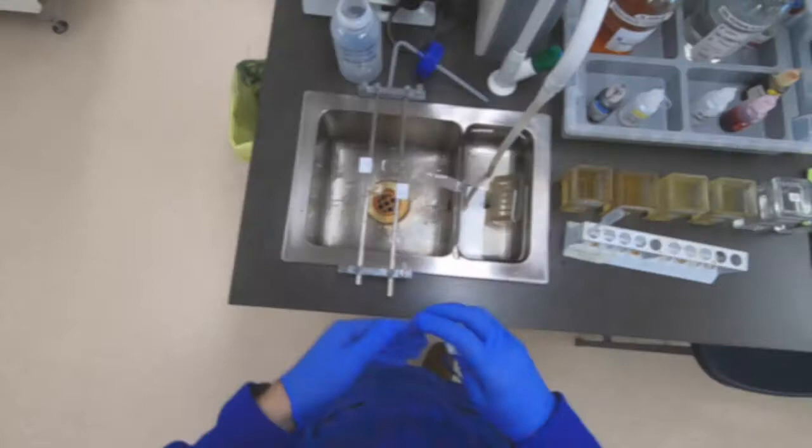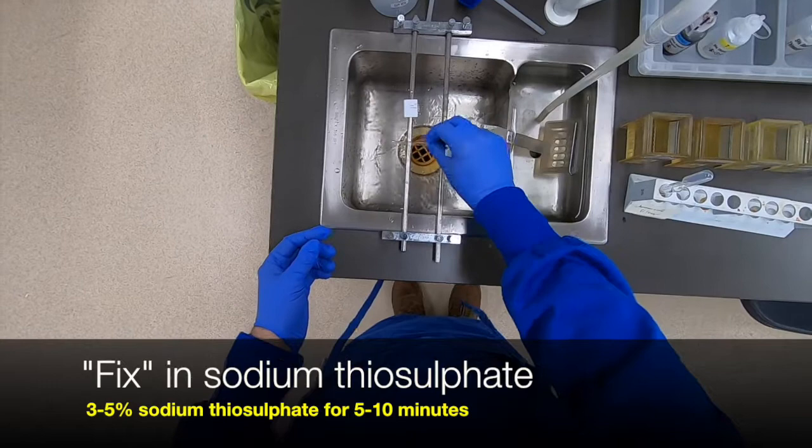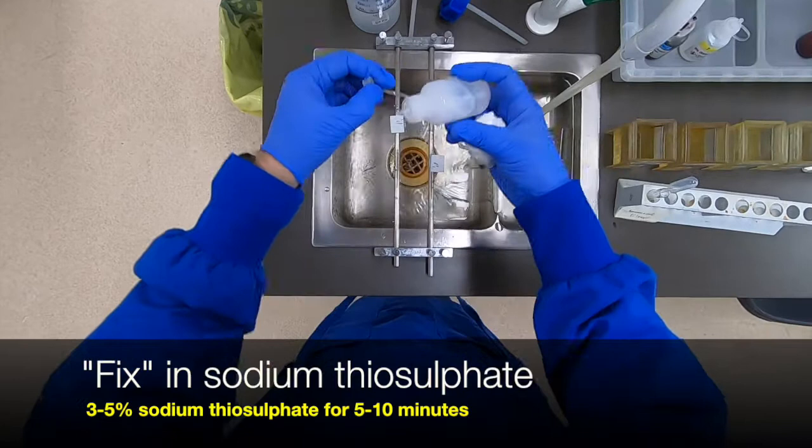Now the next very critical step is to remove any of the excess free silver, silver salt within the section using sodium thiosulfate. So this will dissolve any of that free silver out of the section. And therefore you won't get any further precipitate onto background structures later on.